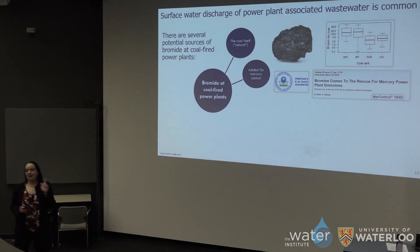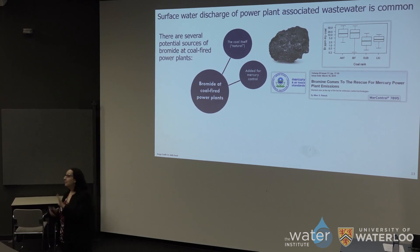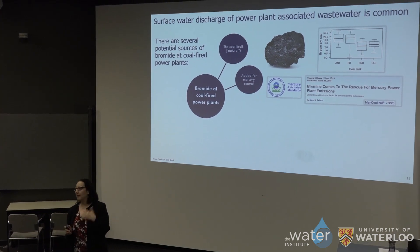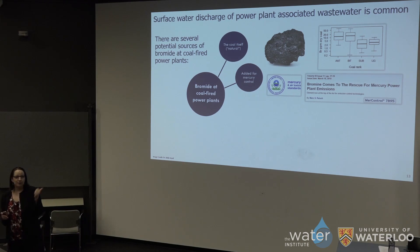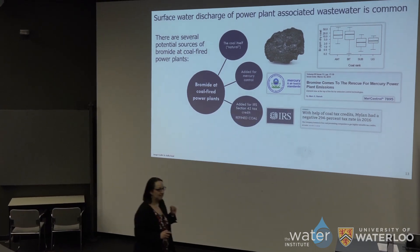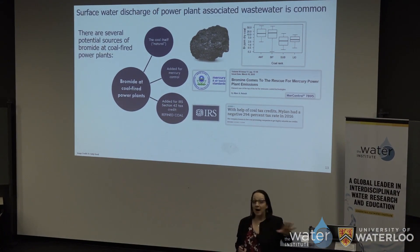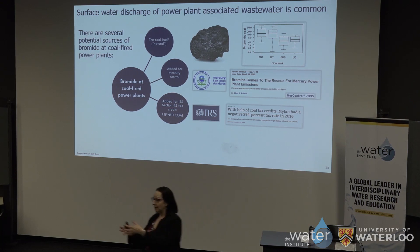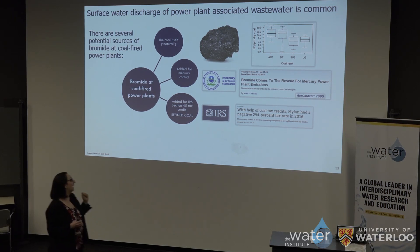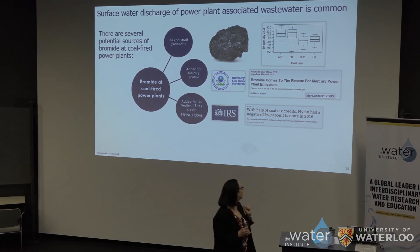The US government got into this too. They thought if adding bromide to coal helps with mercury, maybe it helps with NOx and SOx as well. Sure enough, refining coal under certain conditions — adding bromide, iodide, and some other metals — reduces NOx emissions, SOx emissions, and mercury. The government created a tax credit allowing companies unrelated to the coal plant to buy coal from the mine, treat it with this refining chemical, and ship it to the power plant. If they do that, they get the tax credit. With this coal tax credit, Mylan — the company that makes EpiPens — had a negative 294% tax rate in 2016, even though they don't touch any of the coal process. This is a packaged tax credit they take advantage of.